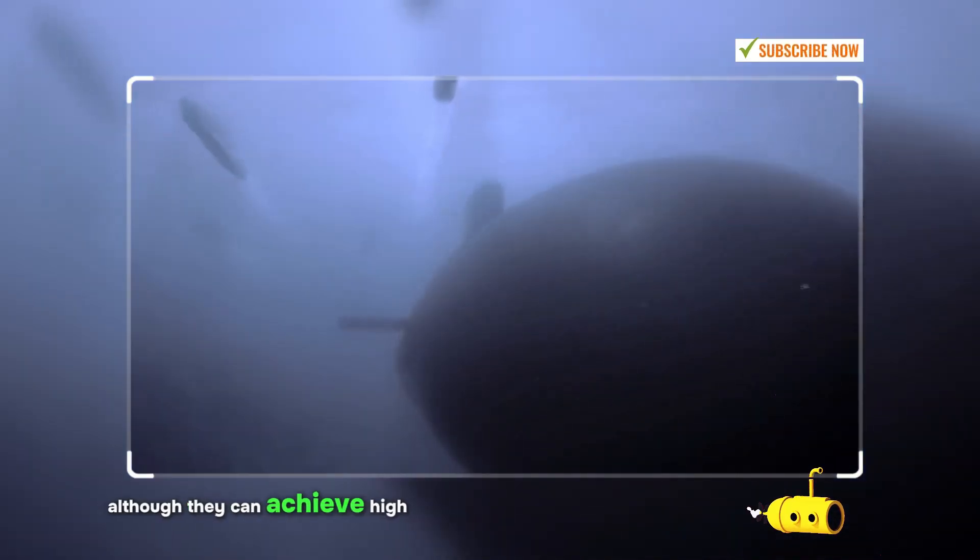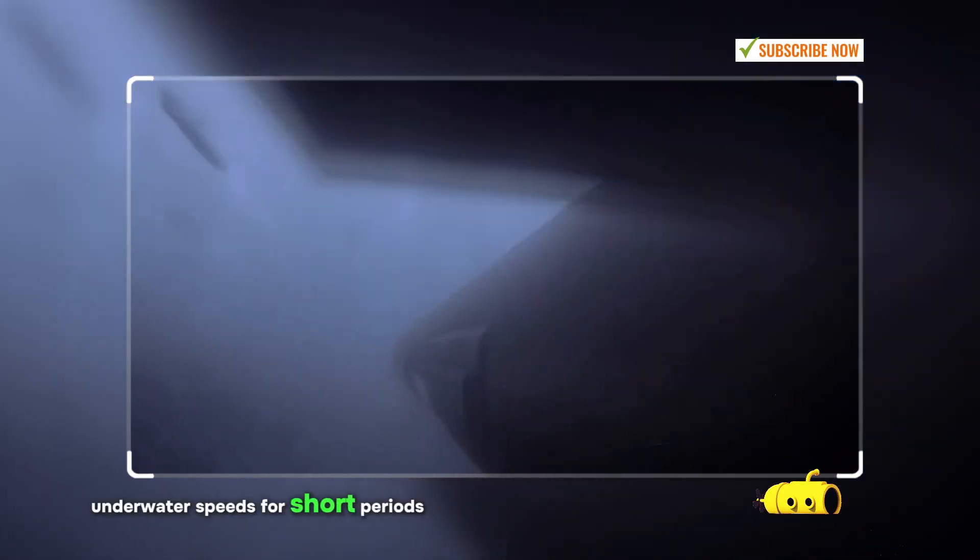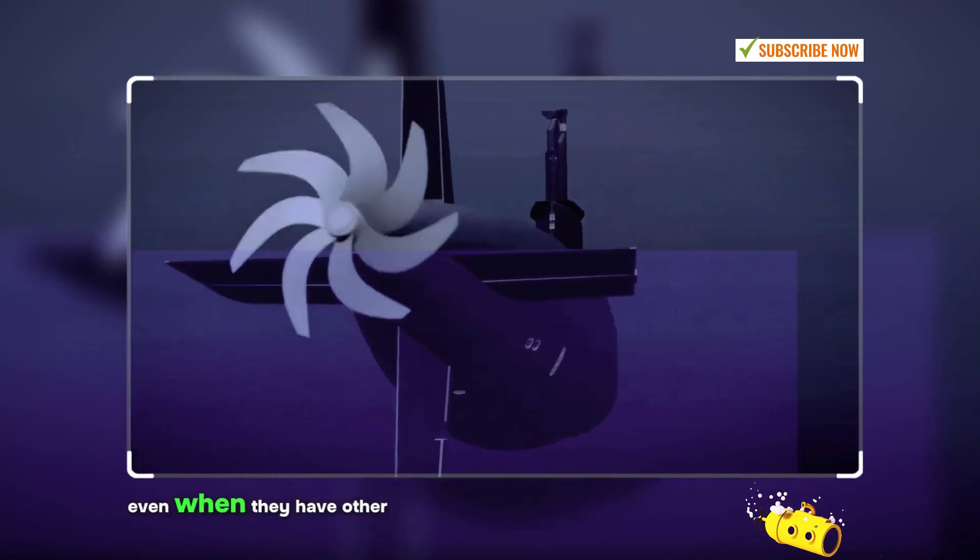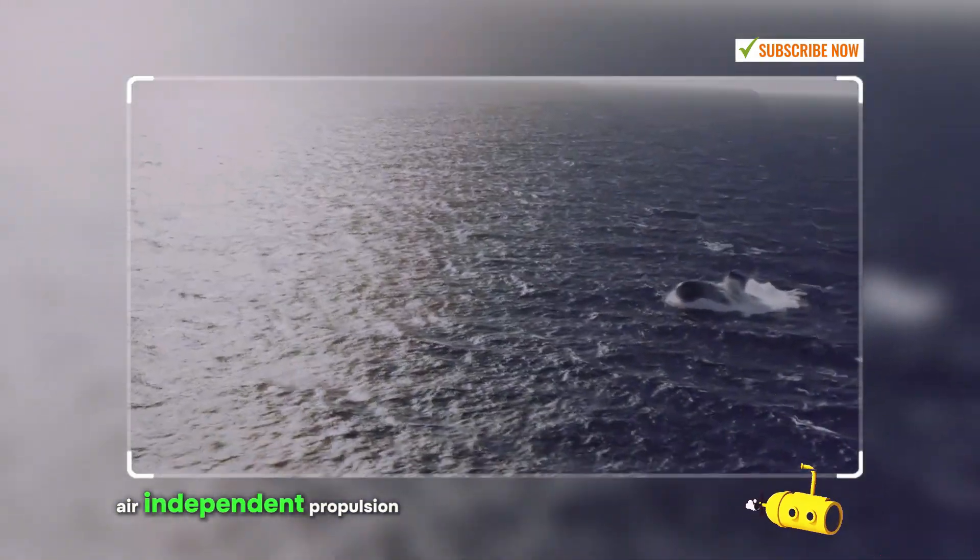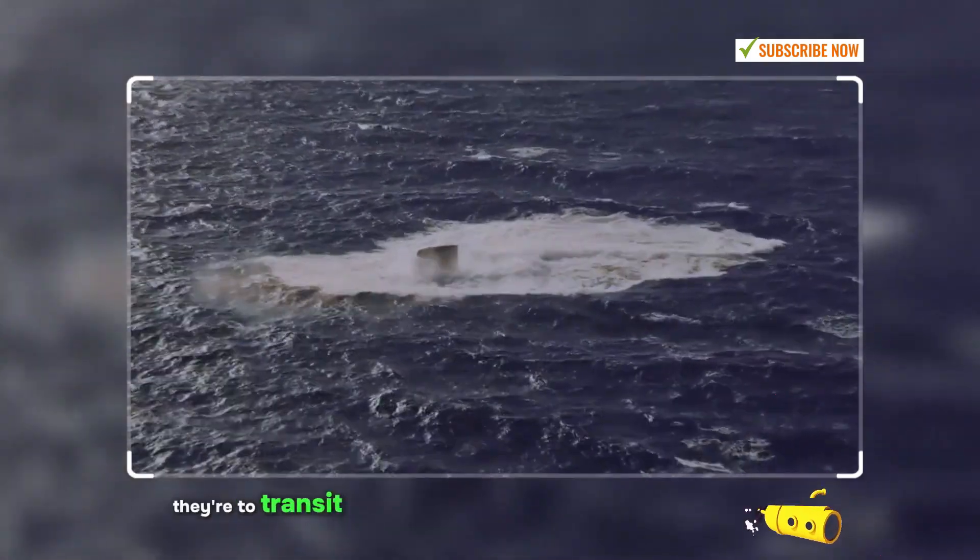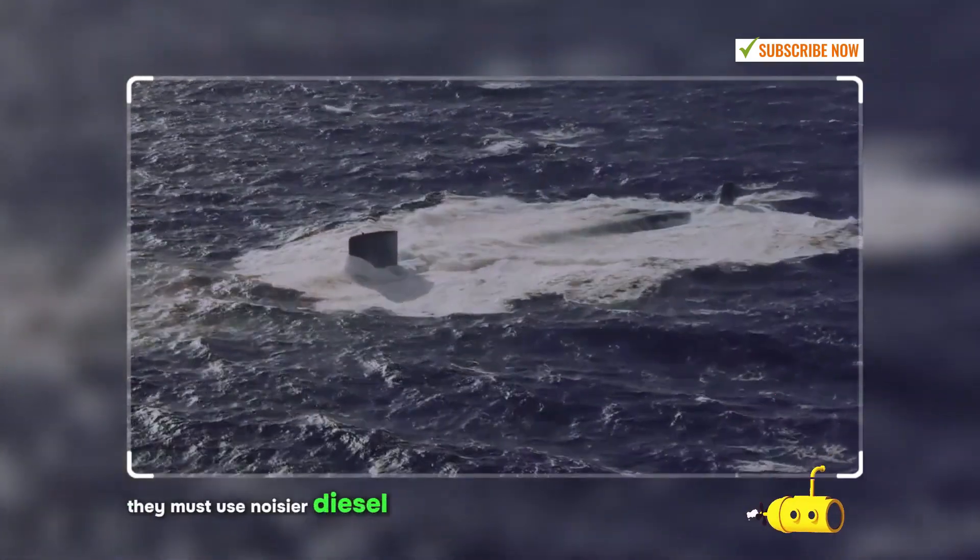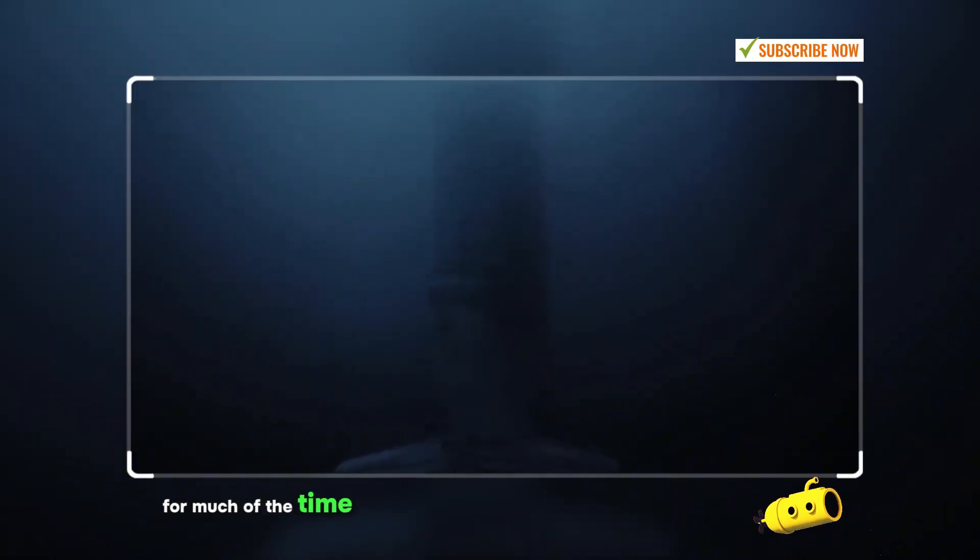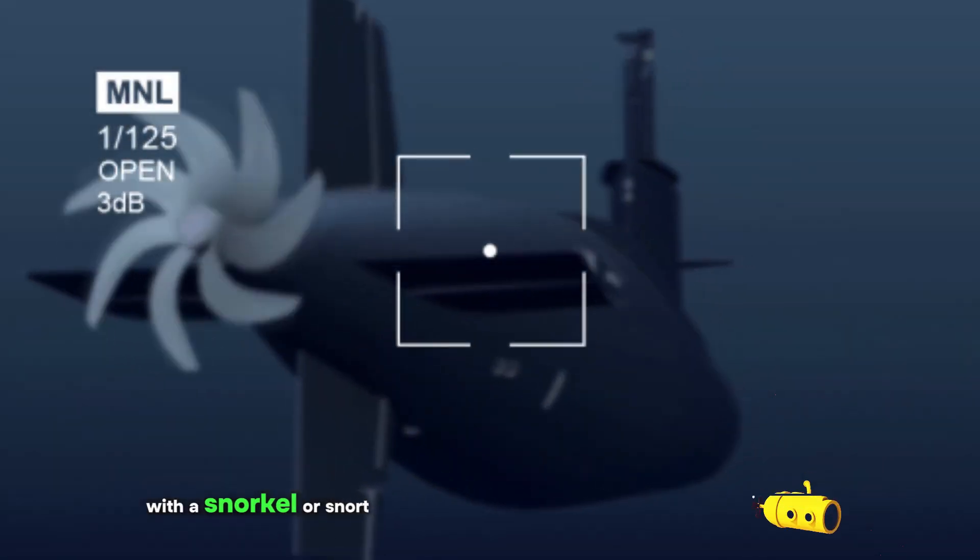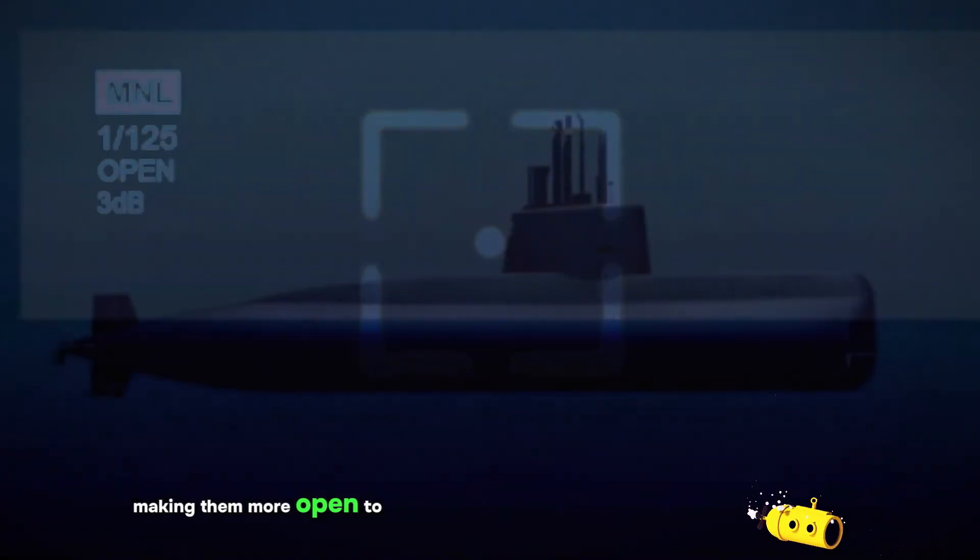Although they can achieve high underwater speeds for short periods, they must recharge their batteries at intervals, even when they have other air-independent propulsion for low-speed patrols. If they're to transit, they must use noisier diesel engines for much of the time. This means operating near the surface with a snorkel or snort mast above the water, making them more open to detection.